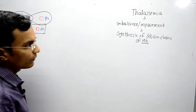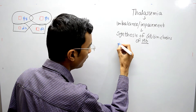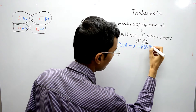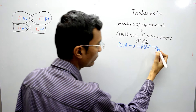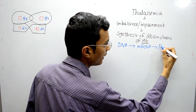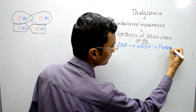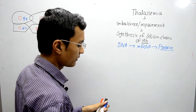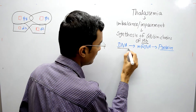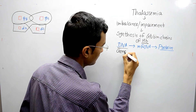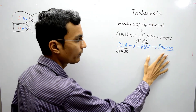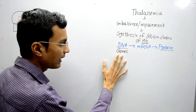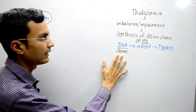We also know the central dogma of life: DNA to mRNA, and mRNA to amino acid sequences and finally into protein. Hemoglobin is a quaternary protein, and there are genes responsible for the coding of these four different chains. If there is any defect in the genes, then thalassemia occurs.